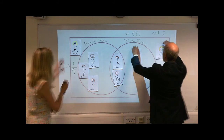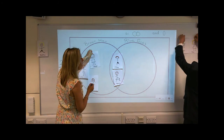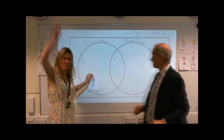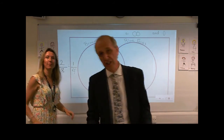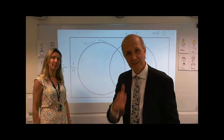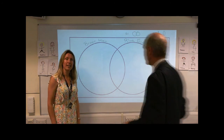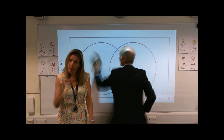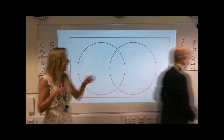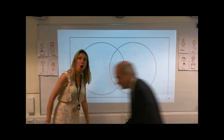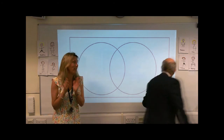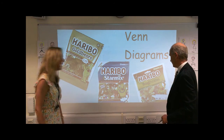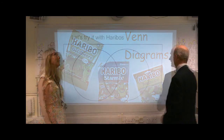Let's move on. Shall we use some sweets? Let's use some Haribo! You could do this at home — just ask whoever's looking after you to get some Haribo, because Maths and Haribo definitely go together. Also, what you can do is get a piece of A4 paper, get a pen and draw two circles that overlap or join, like we have here, and you can try this at home. So we've got Gold Bear, Starmix and Tangfastics.